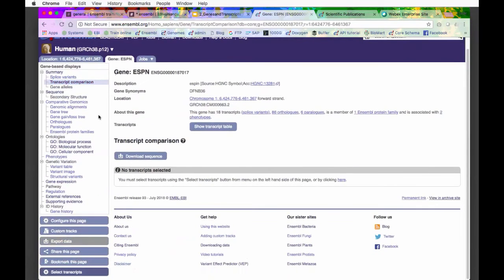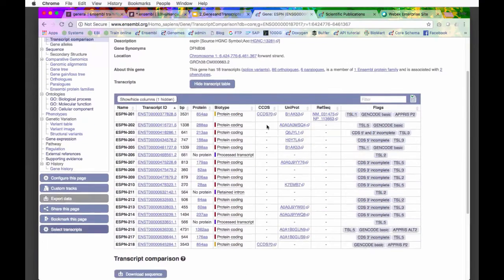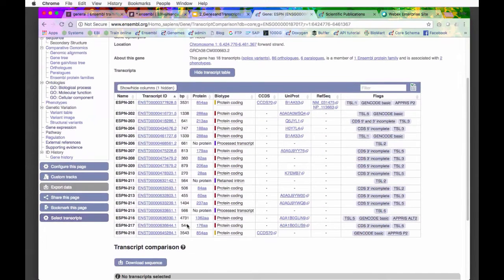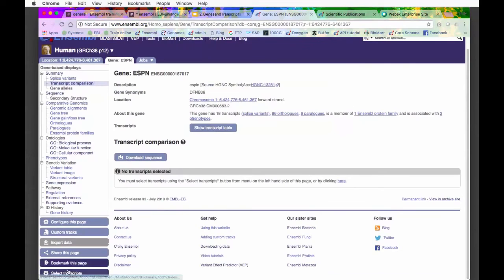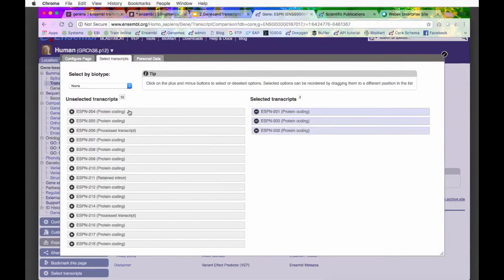I'm going to go to transcript comparisons now, which is near the top, because I'm going to have a look at all these different transcripts. If I now show the transcripts again, you can see we've got quite a lot of different transcripts. I'd like to know what the differences between them are. I can do this if I go to this Select Transcripts button. I can choose which transcripts I want to see. I'll just select the top three here.